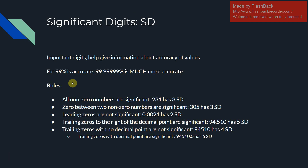Now, to cap off, we're going to be talking about significant digits. Significant digits are very important in chemistry — they help you give information about how accurate your values and results are. For example, a success rate of 99% is fairly accurate, but 99.99999% — a value with seven significant digits — is much more accurate. Similarly, 21% is accurate, yet 21.23756 is much more accurate than just 21%.